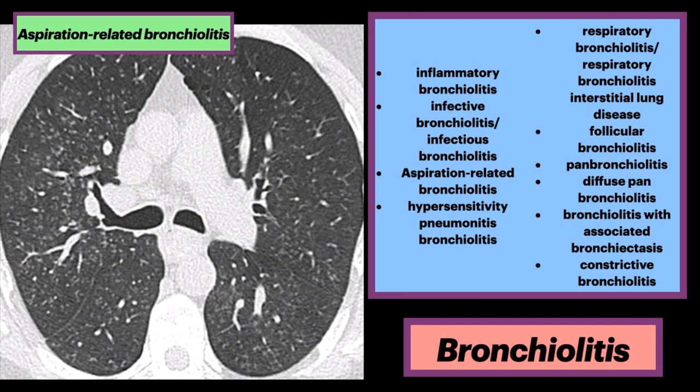Here is a different patient showing bilateral diffuse micronodules that spare the subpleural lung and fissures, characteristic of a centrolobular distribution. Lentil pneumonia is a subtype of diffuse aspiration bronchiolitis that specifically refers to aspiration of legumes, which may elicit a granulomatous reaction.